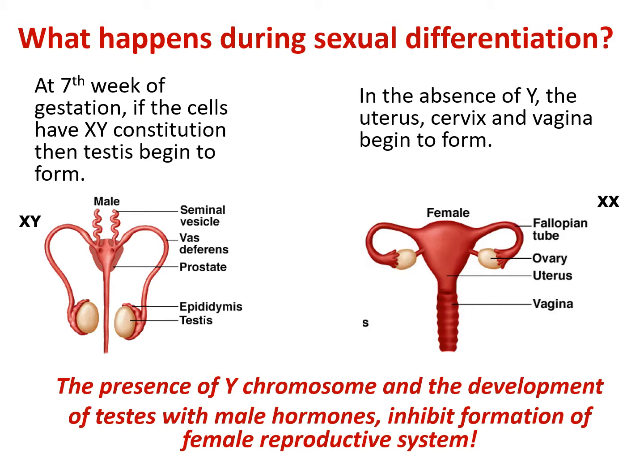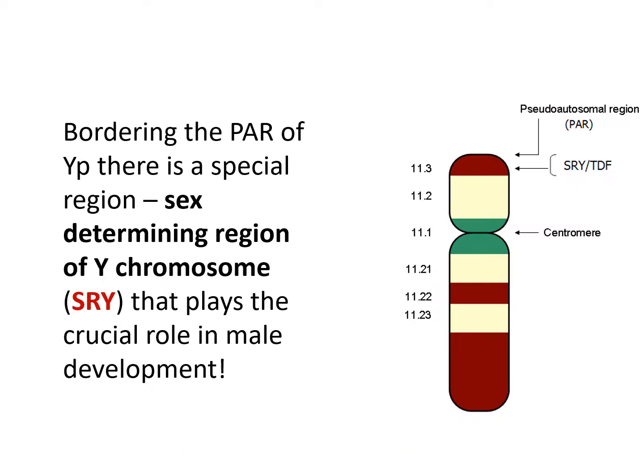By about the seventh week of gestation, if the cells contain XY constitution, the testes begin to form. When there is absence of Y, then uterus, cervix, and vagina begin to form. The presence of the Y chromosome and development of testes with male hormones inhibit formation of the female reproductive system. When there is no Y chromosome — regardless of how many X chromosomes are present — absence of Y triggers development into female.